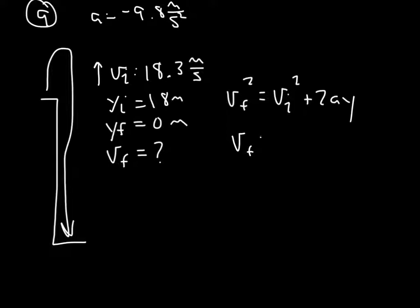Again, go through making check marks. See which one you can work with. Our final velocity is square root of velocity initial squared plus 2ay.